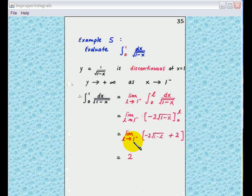And you let L go to 1 minus. L go to 1 minus means L very close to 1 but less than 1. So the value inside goes very close to zero and eventually the limit is equal to 2. Therefore, the improper integral comes to 2.